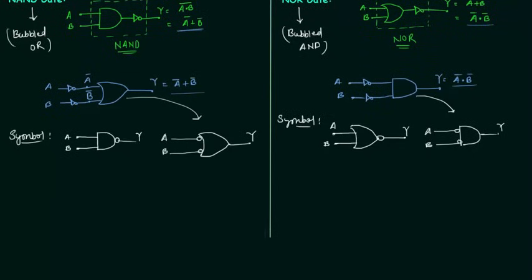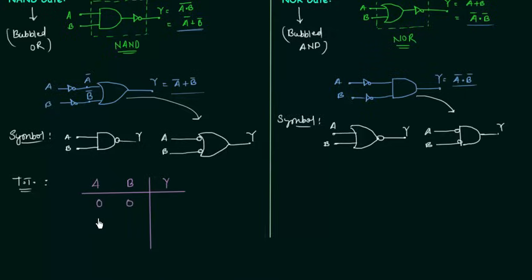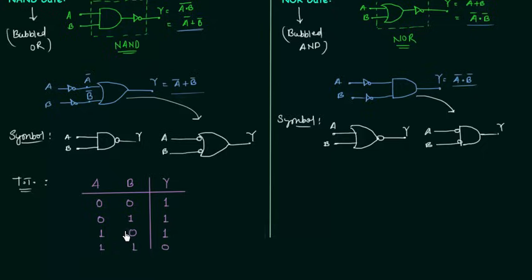Now we will move to truth tables. Truth table for NAND gate — I will take a 2-input NAND gate with inputs A and B, and output Y. You only have to complement the output of AND gate: 0,0 gives 0 in AND, complementing gives 1; 0,1 gives 0 in AND, so 1; 1,0 gives 0 in AND, so 1; 1,1 gives 1 in AND, so 0. Or you can simply substitute values of A and B into the expression A complement OR B complement.